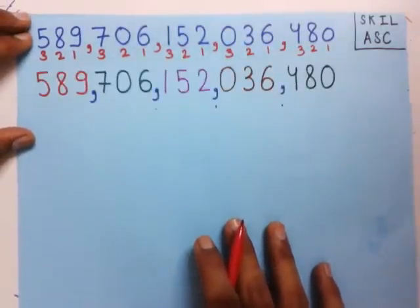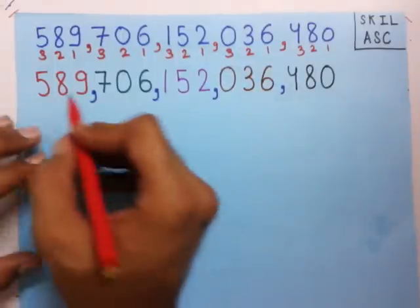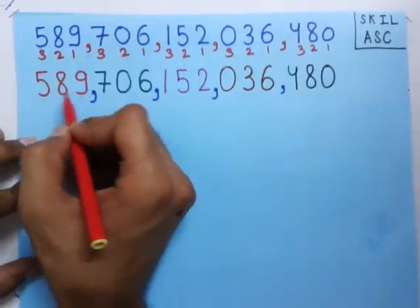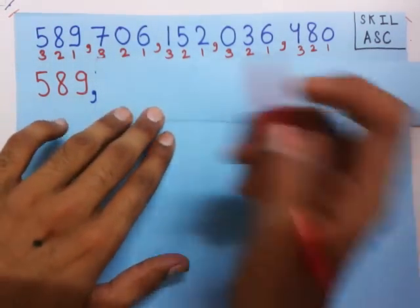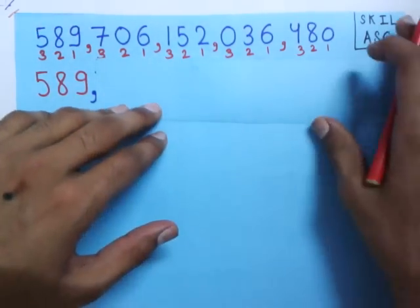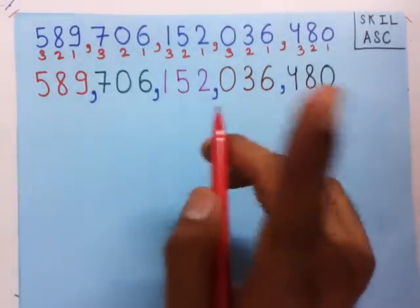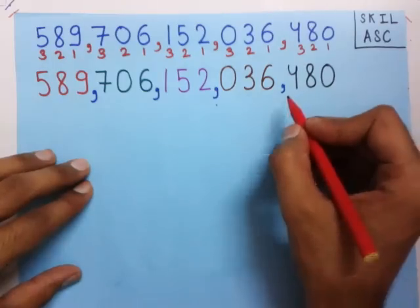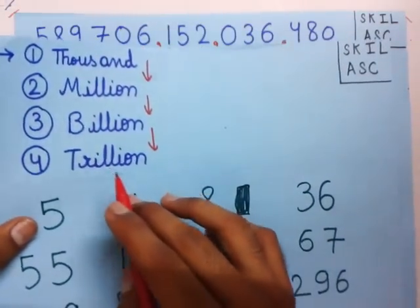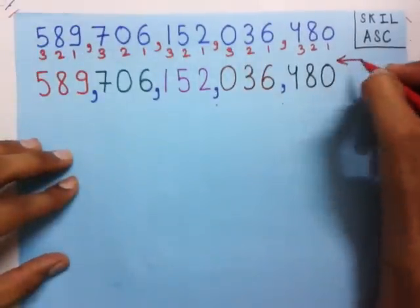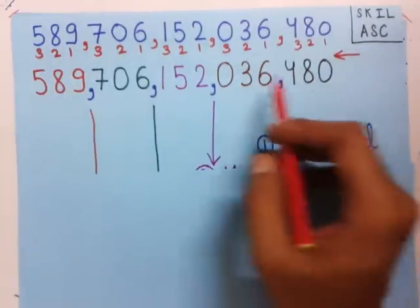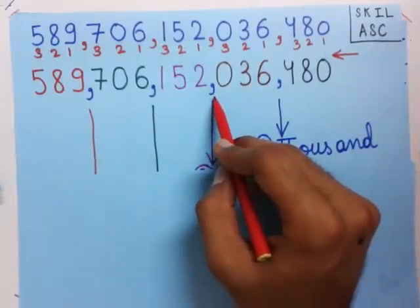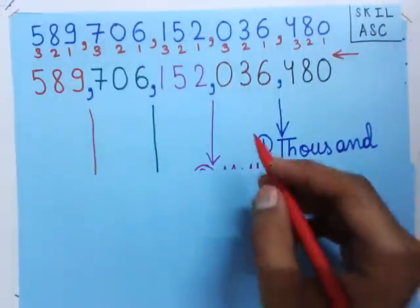So now we can write this number with commas and we have got new smaller numbers. We can read each smaller number — for example, we read this one as 589. Now the next thing you must remember: under these commas you put the four points. Starting from the right side, the 1st comma gets thousand, the 2nd comma gets million, the 3rd comma gets billion, and the 4th comma gets trillion.